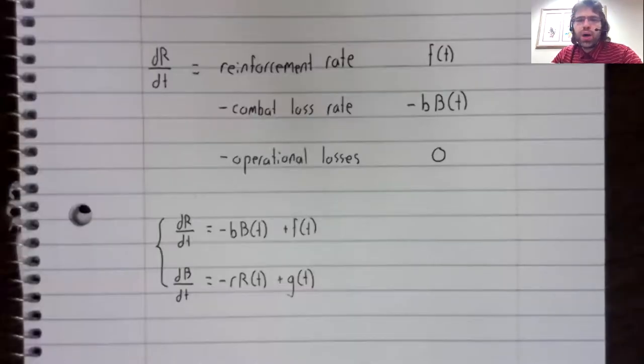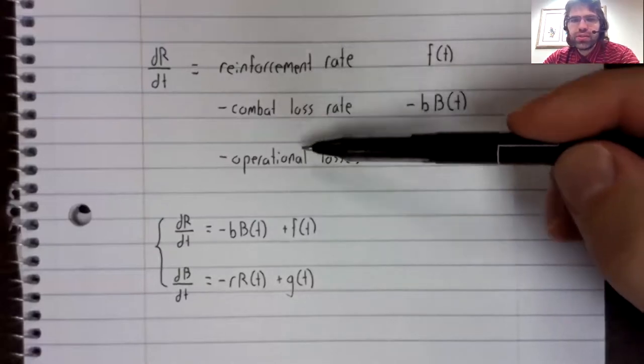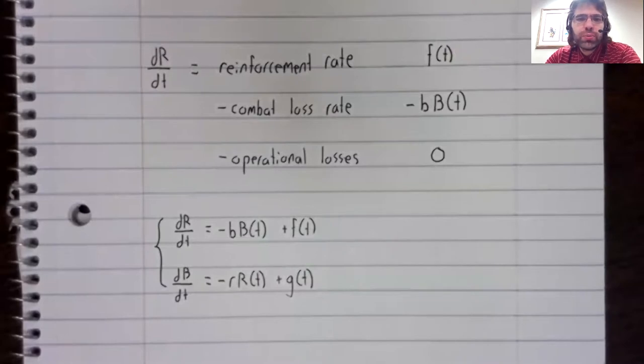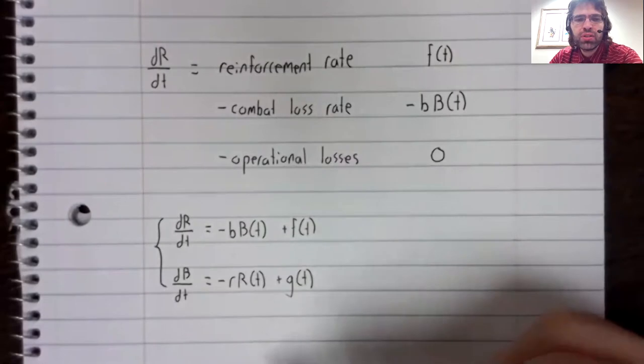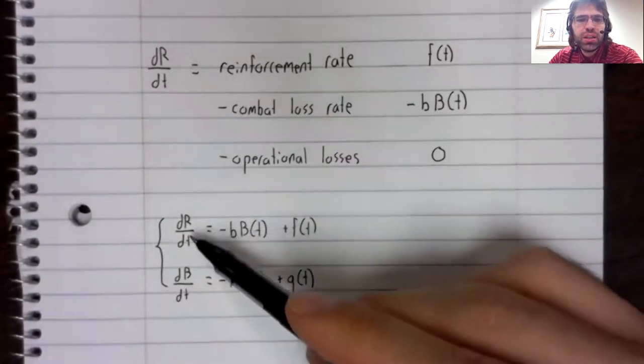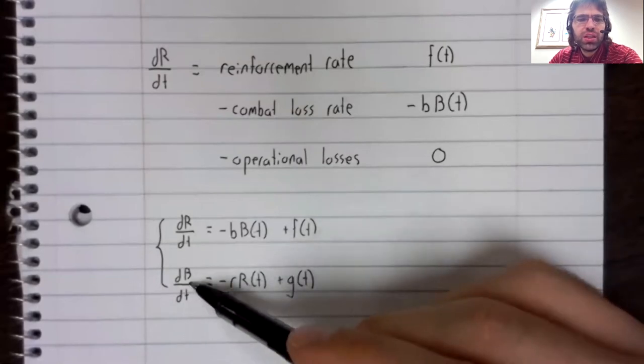Blue Army also has these factors. And Blue Army and Red Army are treated as being similar to each other. So we see the same terms. The size of Blue Army appears here. The size of Red Army appears here.